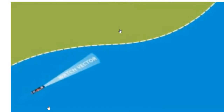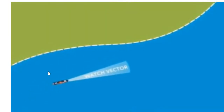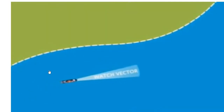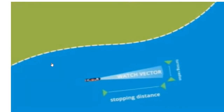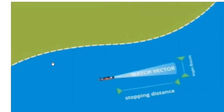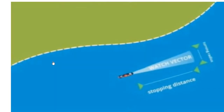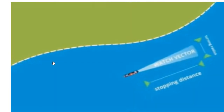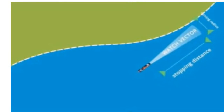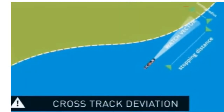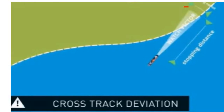The watch vector is also known as the anti-grounding cone or look-ahead setting, and is based upon the stopping distance and turning radius of the vessel. The watch vector defines the area in which ECDIS will alarm should the vessel approach a navigational hazard. Without this setting, the ECDIS will provide no advance warning.